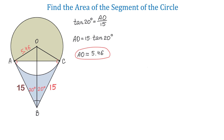Now that we have the radius, let's find the area of the segment. First, we find the area of the sector. Then we find the area of triangle AOC. If we subtract the area of the triangle from the area of the sector, we get the area of the segment.